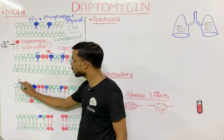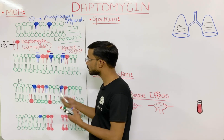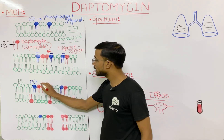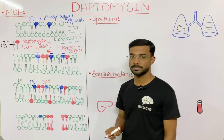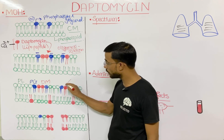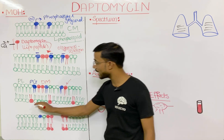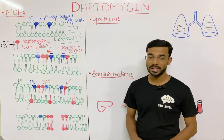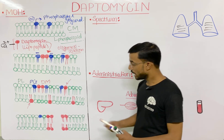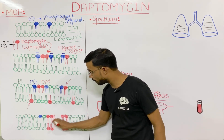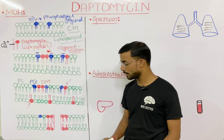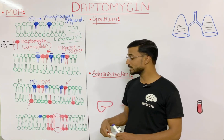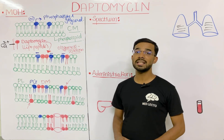You can see the phospholipid along with the phosphatidylglycerol (PG) and the daptomycin complex present in both layers — both the upper layer and the lower layer. In the last step, due to the presence of the daptomycin complex in the cell membrane, you will see the formation of a hole.